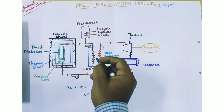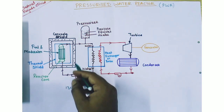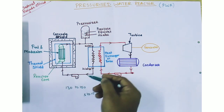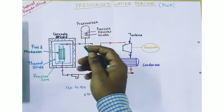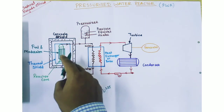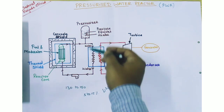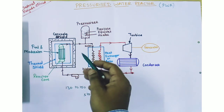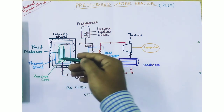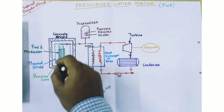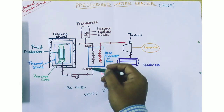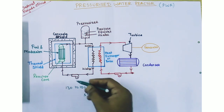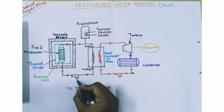The high pressure helps in absorbing heat by the water in a liquid state in the reactor. If normal pressure water were used, it would convert into steam inside the reactor core itself. Therefore, the pressure is maintained at 130 to 150 bar so that the water does not convert into steam inside the reactor core. The coolant from the heat exchanger is recirculated to the reactor with the help of a coolant pump.